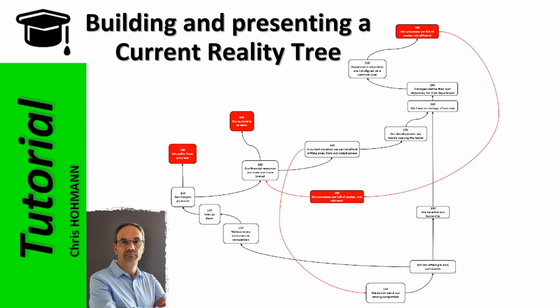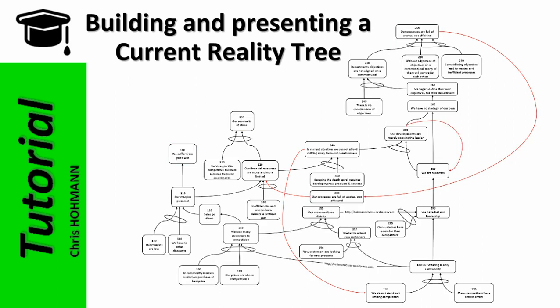Here is the executive summary version of our current reality tree, with information reduced to the minimum for a quick walkthrough. The executive summary version purposely breaks some logic rules and good practices, so it is not recommended for beginners - I will provide a specific video for executive summary trees. My reading and presenting option is to start with the branch leading to UD 100, then the branch leading to UD 300, and finally the last branch up to UD 200. From here we read the CRT bottom-up.